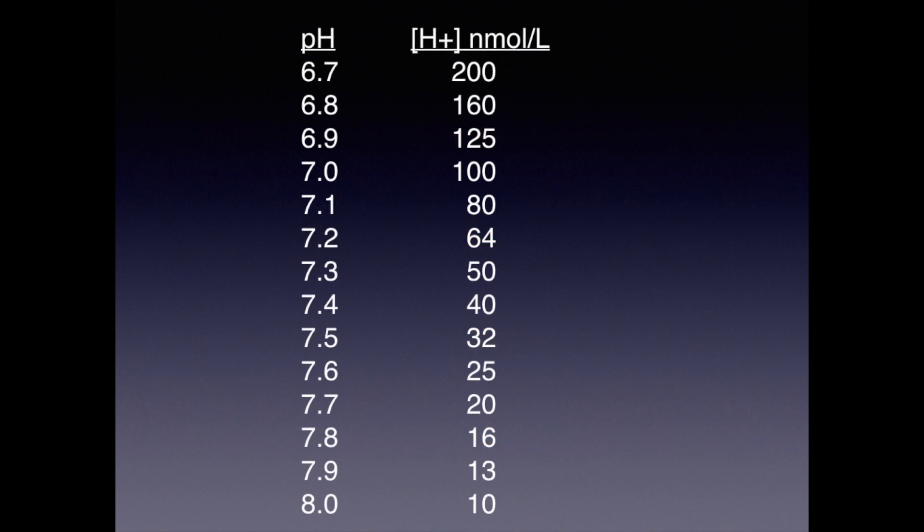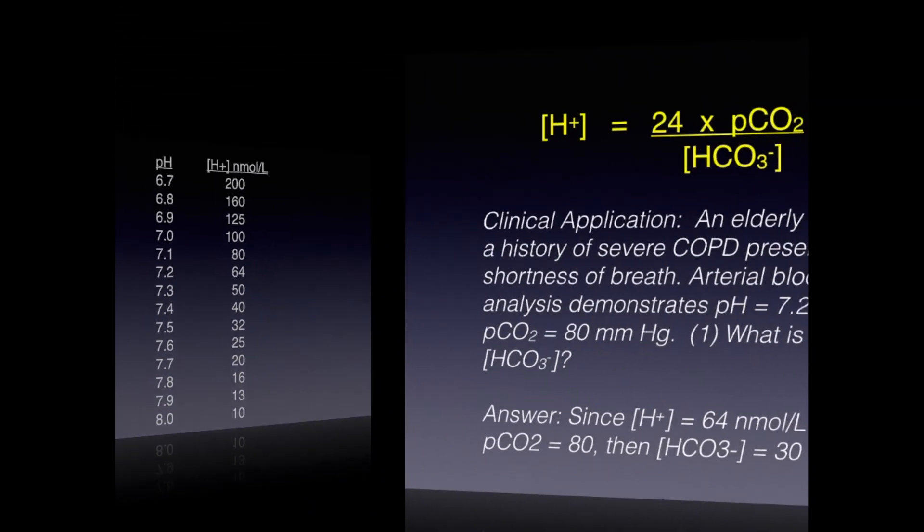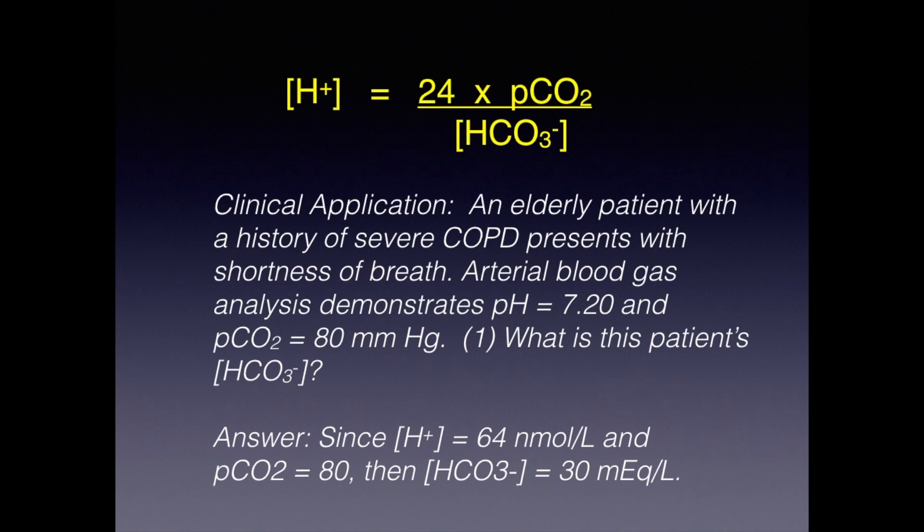So now let's return to our clinical scenario. An elderly patient with a history of severe COPD presents with shortness of breath. Arterial blood gas analysis demonstrates pH equals 7.20 and pCO2 equals 80 millimeters of mercury. The question is, what is this patient's serum bicarbonate level? By using our equation, we find that when pCO2 equals 80 and hydrogen ion concentration equals 64, then solving for bicarbonate, we find that serum bicarbonate level equals 30 millequivalents per liter.